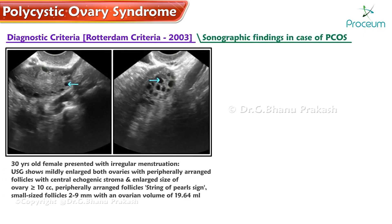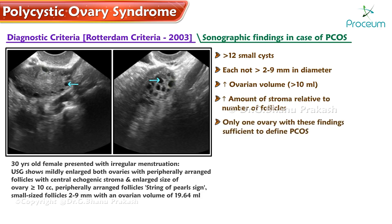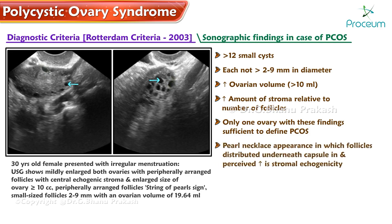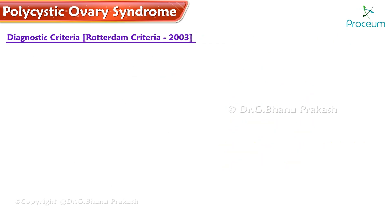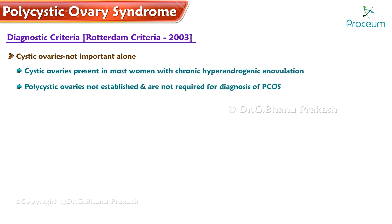Sonographic findings include greater than 12 small cysts, each 2 to 9 millimeters in diameter; increased ovarian volume greater than 10 milliliters; and increased amount of stroma relative to the number of follicles. Only one ovary with these findings is sufficient to define polycystic ovarian syndrome. Other findings like the pearl necklace appearance and perceived increase in stromal echogenicity have been eliminated as diagnostic criteria.